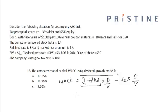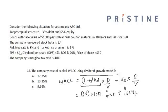When I put in these values: D by V is equal to 0.35, KD is equal to 10.84 into 1 minus tax, which is 0.6, plus KE — the cost of equity — at 15.5%, into E by V, which is 0.65. This gives me a weighted average cost of capital of 12.35%.